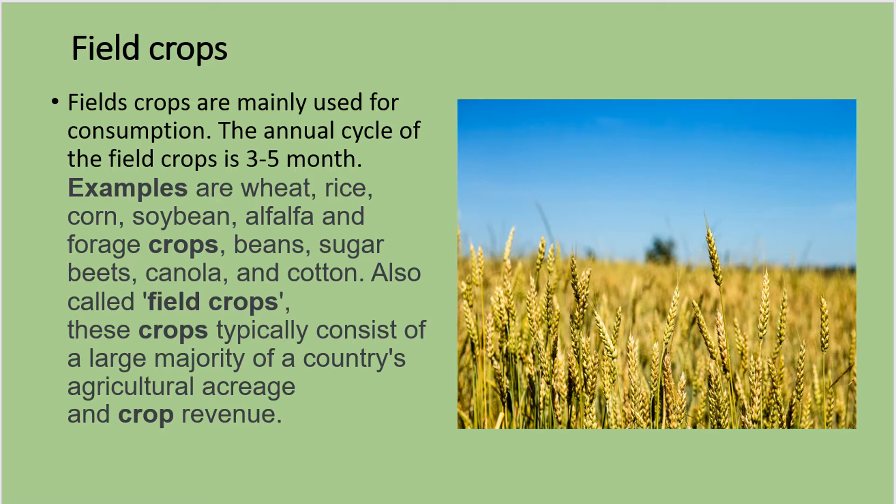Field crops are mainly used for consumption. The annual cycle of field crops is 3 to 5 months. Examples are wheat, rice, corn, soybean, alfalfa and forage crops, beans, sugar beets, canola and cotton. These crops typically consist of a large majority of a country's agricultural acreage and crop revenue.